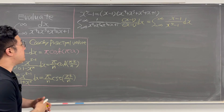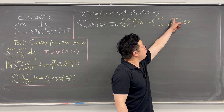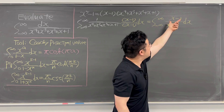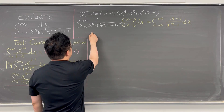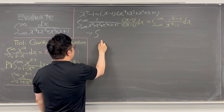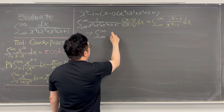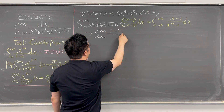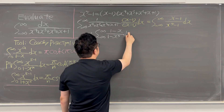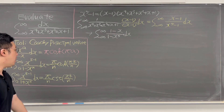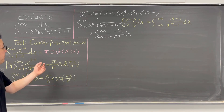Okay, so now if we multiply negative 1 to both the numerator and denominator, we can switch the signs. That gives us the integral from negative infinity to infinity of 1 minus x over 1 minus x to the power of 5 dx, because we want to use those Cauchy principal value tools.